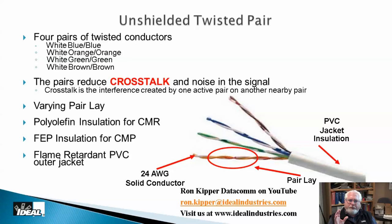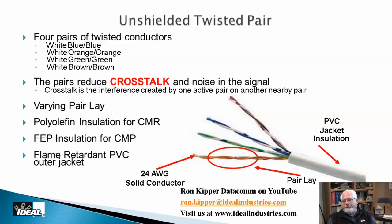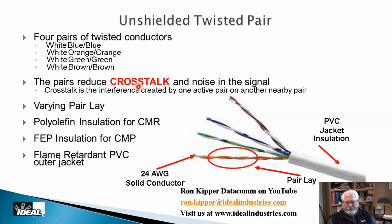All category cables have four pairs, and those pairs are color-coded: blue, orange, green, and brown. Line one is blue, line two is orange, line three is green, and line four is brown. The colors are part of the standards. You don't have to make line one blue, but anyone coming in behind you would expect it. I have videos on wire color code configurations on the channel.